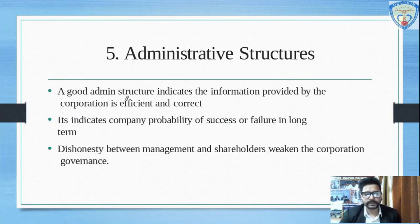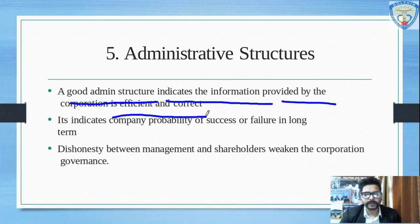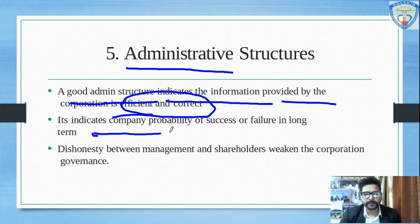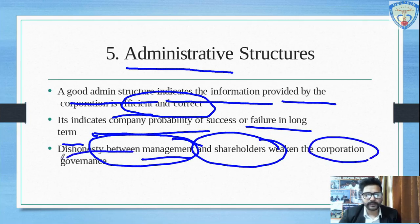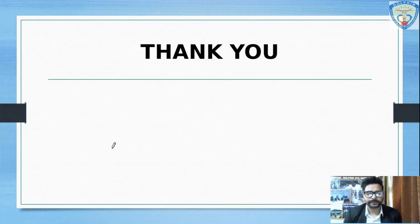The last heading is a good administrative structure, indicating that information provided by the corporation is efficient and correct, to be understood from the administrative perspective. It indicates a company's probability of success or failure in both long-term and short-term development, and should not include dishonesty between management and stakeholders so that the corporation can remain strong. A good corporate governance has these five elements which we have studied.